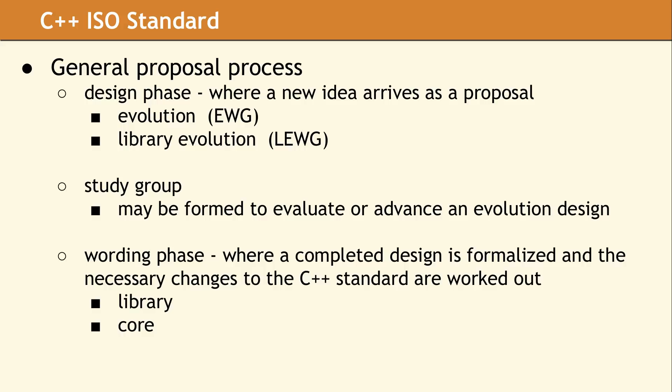Since this is a very lengthy process, it helps to explain why C++11 took so long to be approved. There were numerous proposals, and many of them were massive. C++98 was around 400 pages, and C++11 had around 1,200 pages. The number of comments and the back and forth to correct all of the issues just took a lot of time.